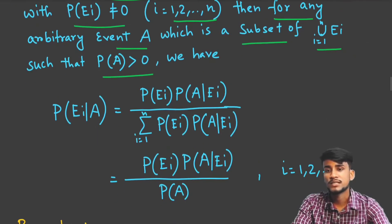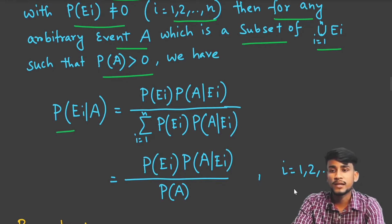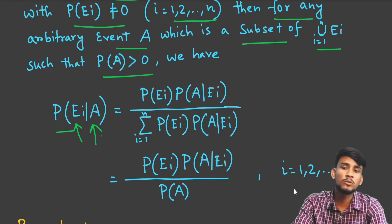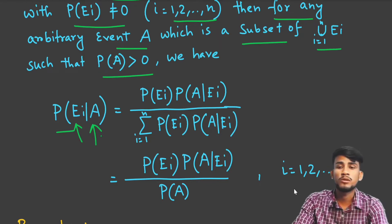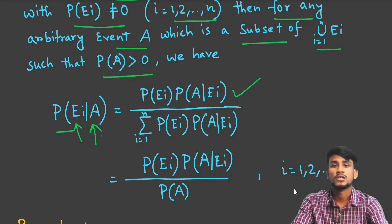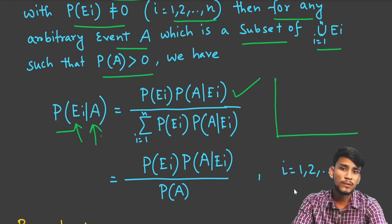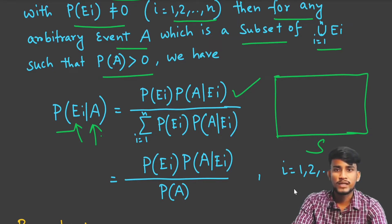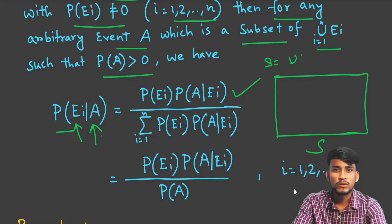The statement of Bayes' theorem gives us: P(Ei|A) — that is, the probability of event Ei given that A has already occurred — equals P(Ei) · P(A|Ei) divided by the sum of all P(Ei) · P(A|Ei) for i = 1 to N. Here, the complete sample space S equals the union of all Ei, so S = E1 ∪ E2 ∪ ... ∪ EN.